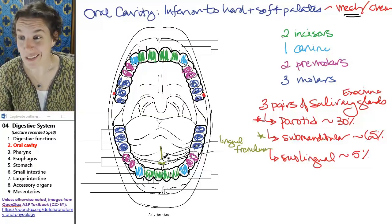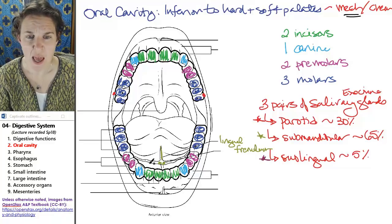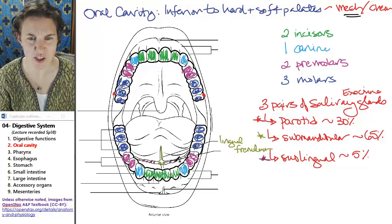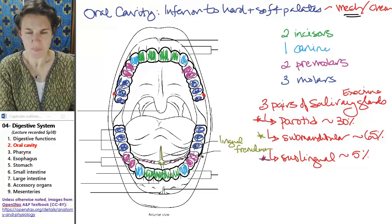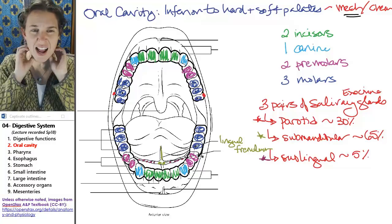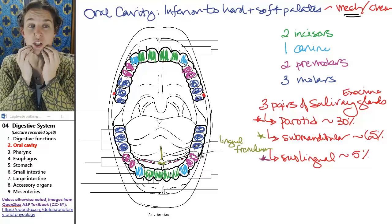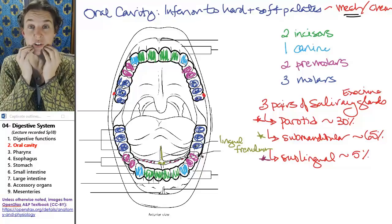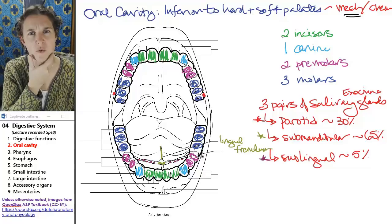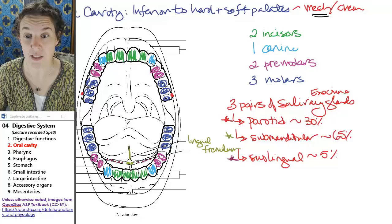The sublingual glands are beneath your tongue, but they have many, many, many, many ducts. So check these guys out. So submandibular glands are actually farther back. They're posterior to the sublingual glands which are truly underneath your tongue. And I'll show you the glands in just a second, but I want you to be aware of where the ducts are because it's a little counterintuitive. So let's look at those glands.